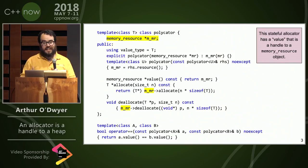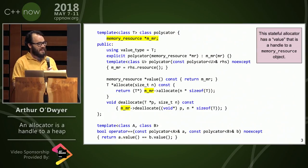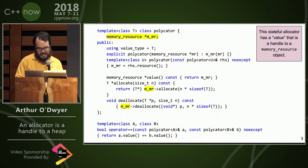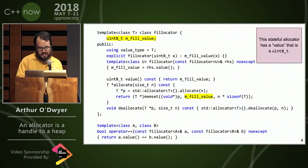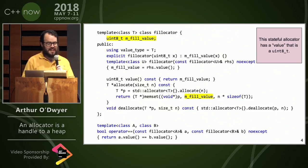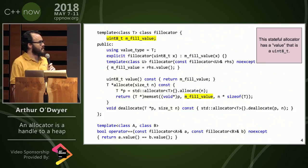So this is an example of an allocator that is a handle to a heap. It is a value type, and its value is the address of a heap. And Marshall said, what about this case? Here we have an allocator that is a value type, but its value is not a handle to a heap.